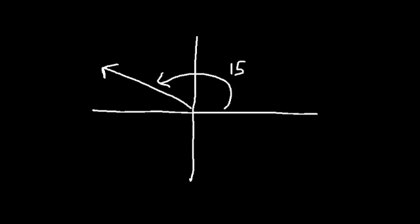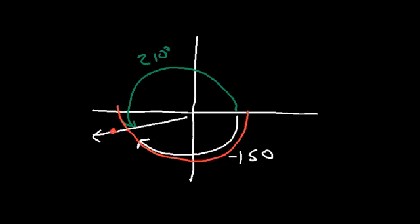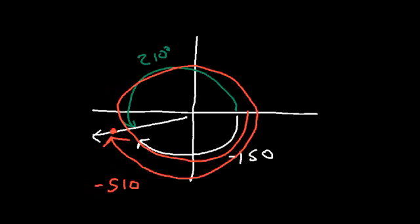On a graph, 150 is in quadrant 2, so this is 150 degrees. Negative 150 is over here — you travel in the other direction to get negative 150. The positive coterminal angle of negative 150 is 210. If you travel in the positive direction, that's 180 plus another 30, which is 210, and you land at the same spot. To graph negative 510: negative 90, negative 180, negative 270, negative 360, negative 450, negative 510 — it takes you to the exact same location.